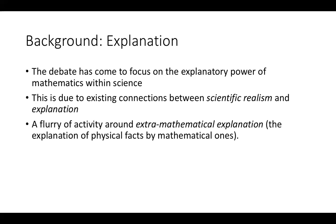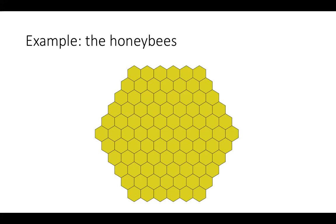This has led to a flurry of activity around extra-mathematical explanation — the explanation of physical facts by mathematical ones. People are looking into science, identifying examples where mathematics plays an explanatory role, and using those as a basis for running the indispensability argument. The claim is that mathematical objects do the same kind of explanatory work as black holes, and so you should believe in them for roughly the same reasons.